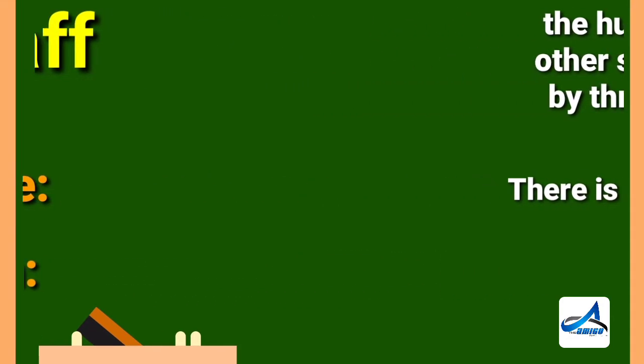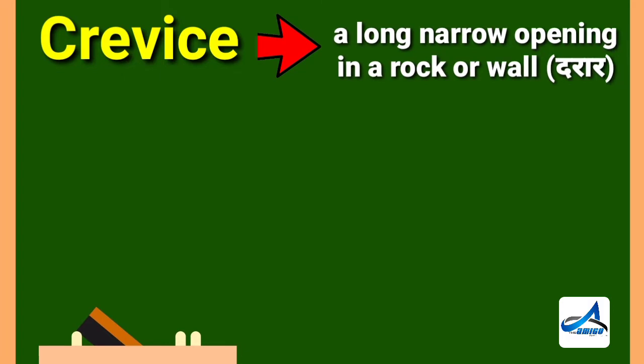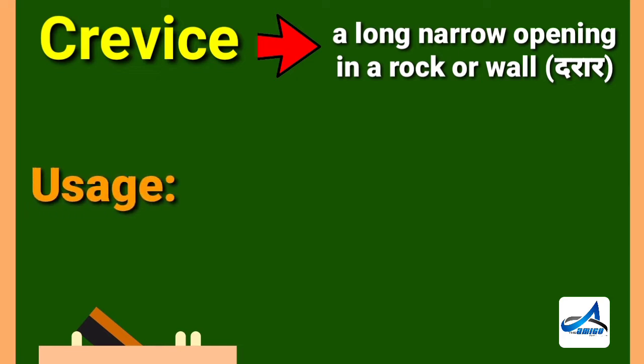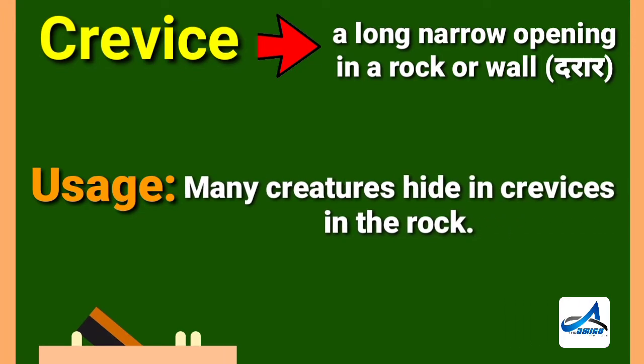The next word is crevice. Crevice means a long narrow opening in a rock or wall. Its Hindi meaning is 'darar.' Now look at its sentence: many creatures hide in crevices in the rock. Its synonym is crack.